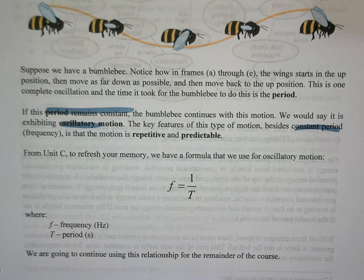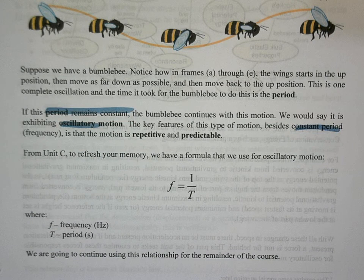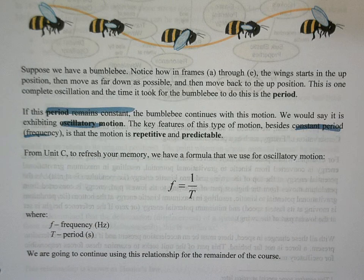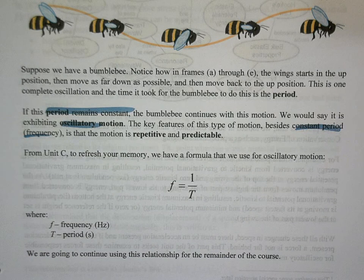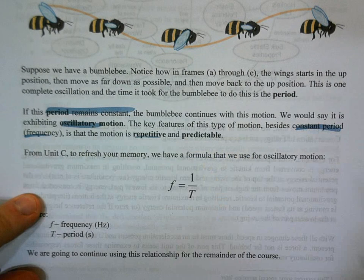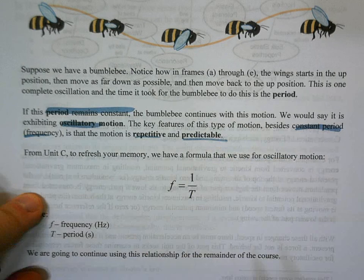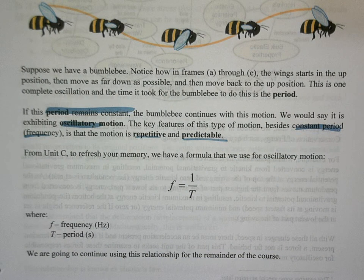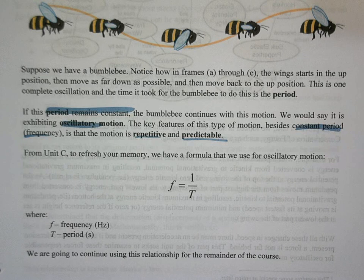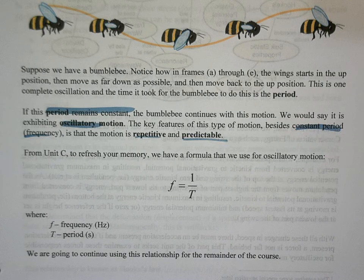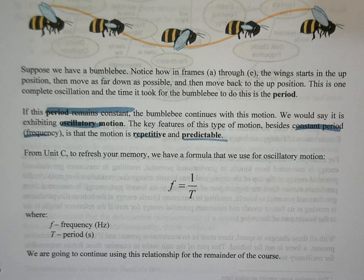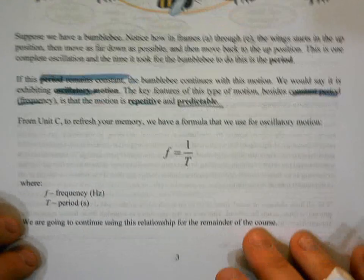And we know period and frequency are related by that inverse relationship. So if we have a constant period, we have a constant frequency. The key is that with oscillatory motion, we want it to be repetitive, but we also want it to be predictable. We should be able to know what's going to happen in a minute, 20 minutes with oscillatory motion. Nothing wild or unexpected should happen. So that's the key. Constant period slash frequency and motion that is repetitive and predictable.